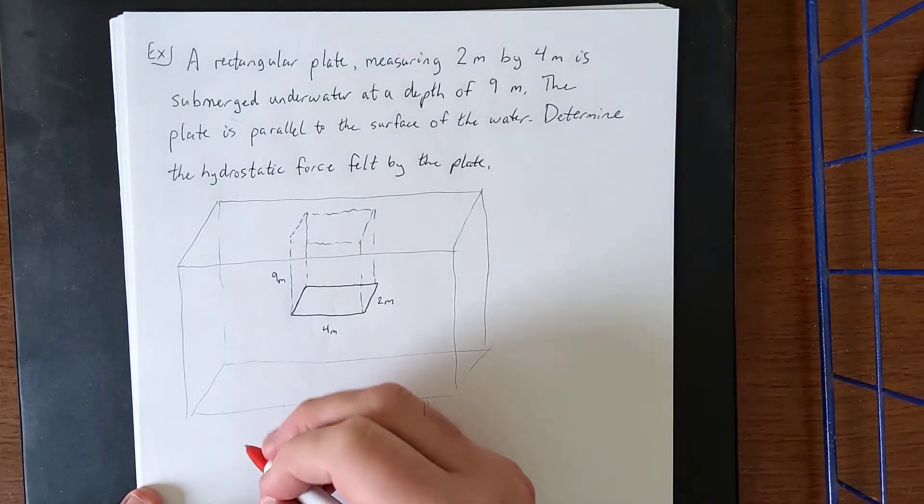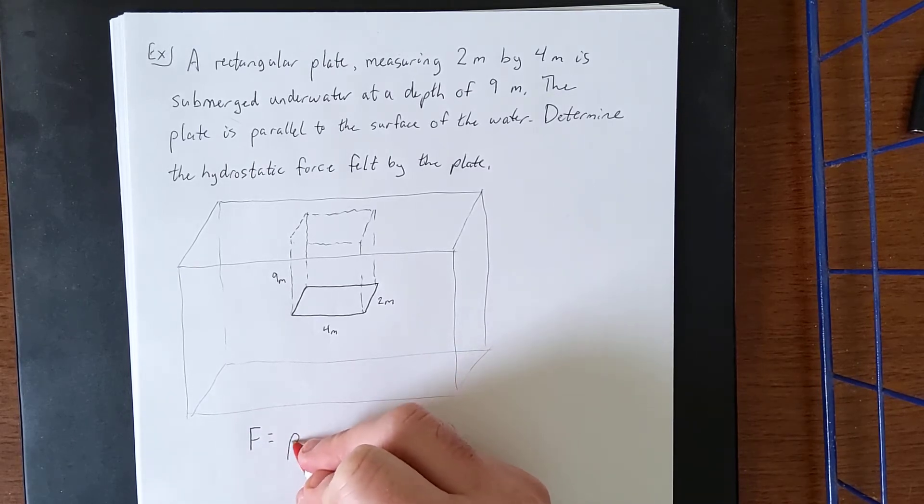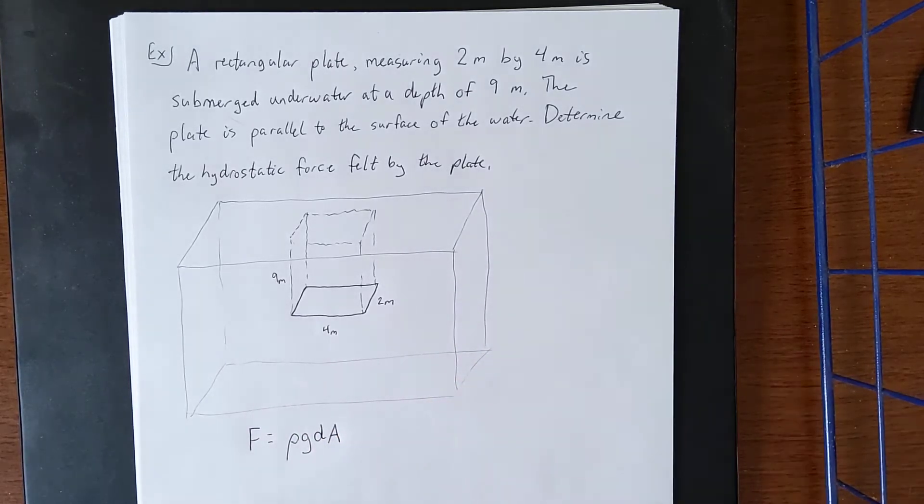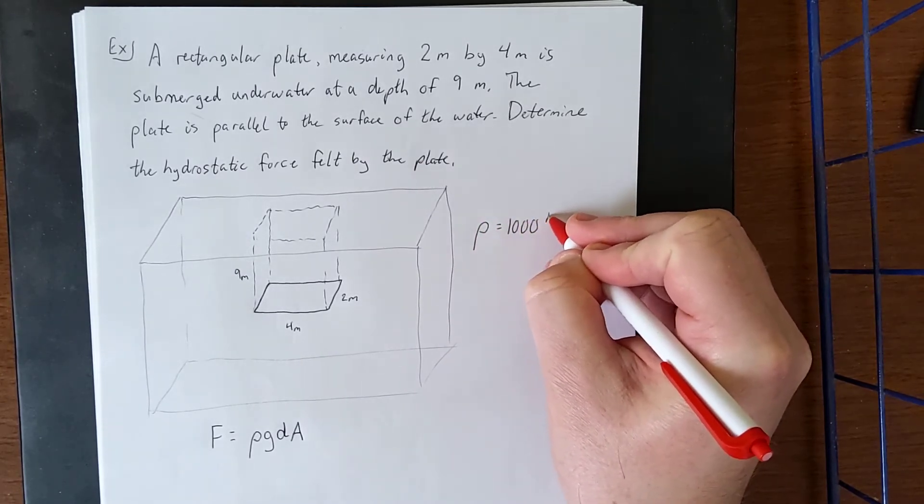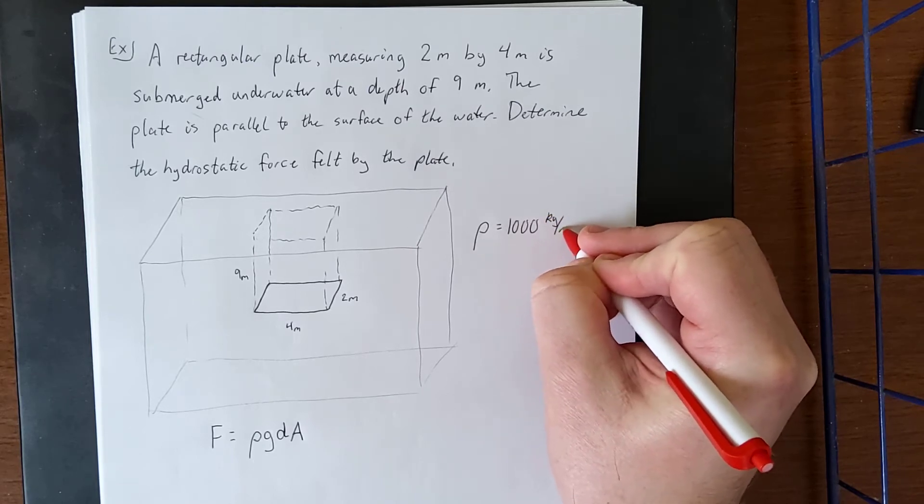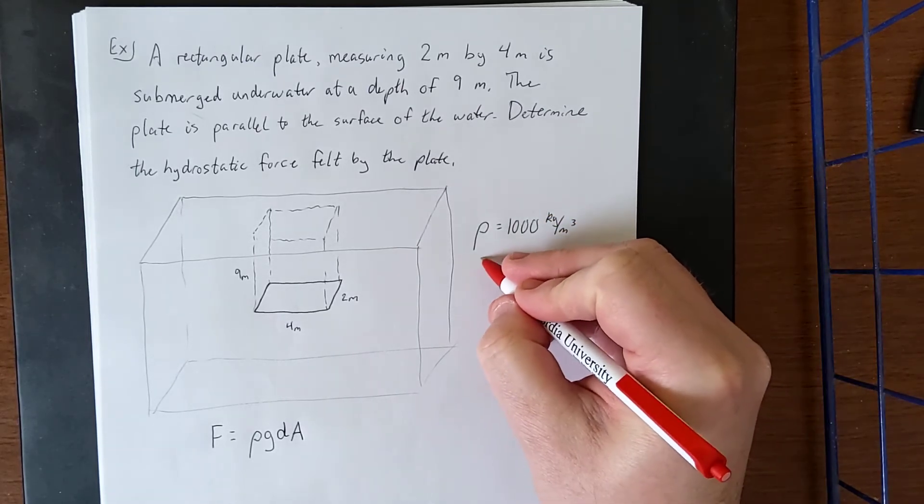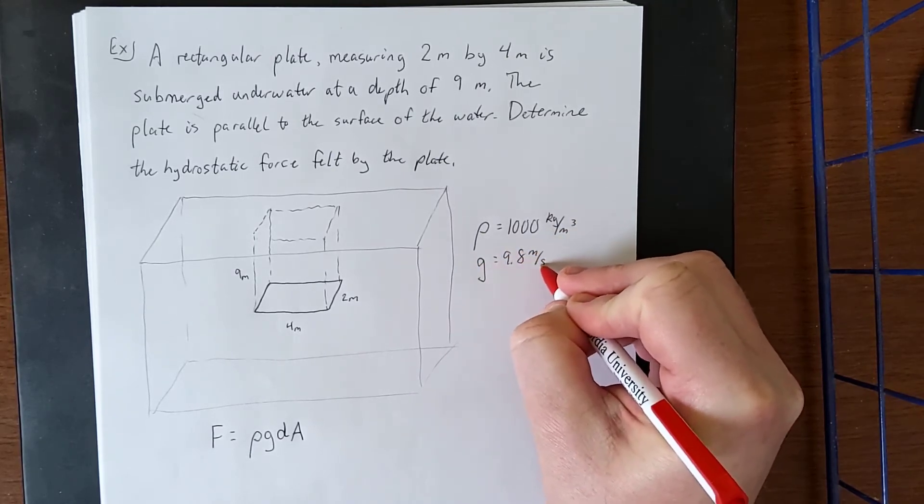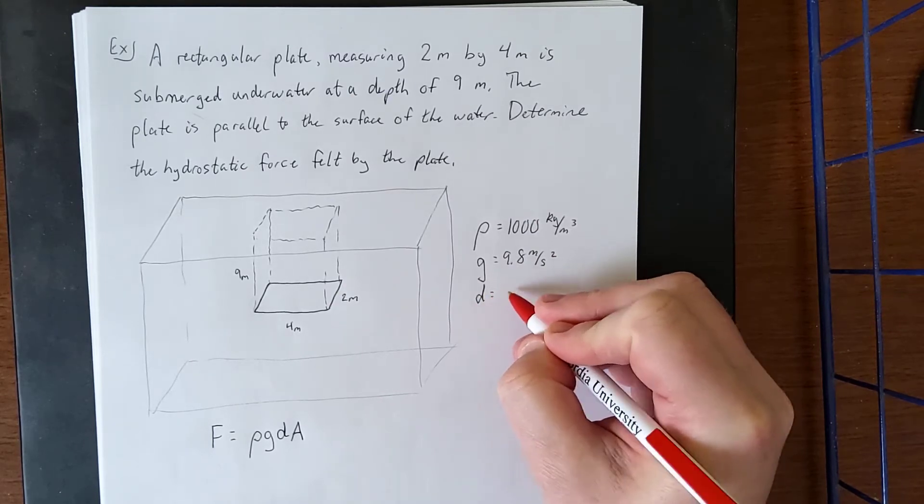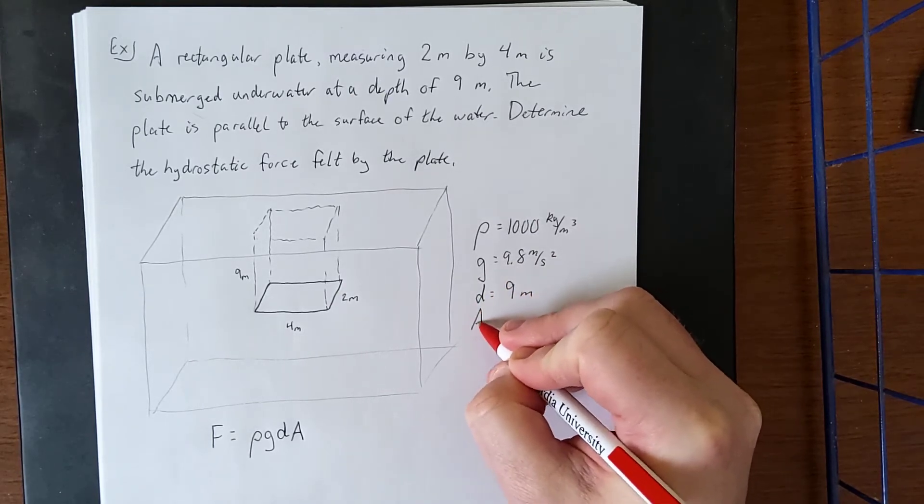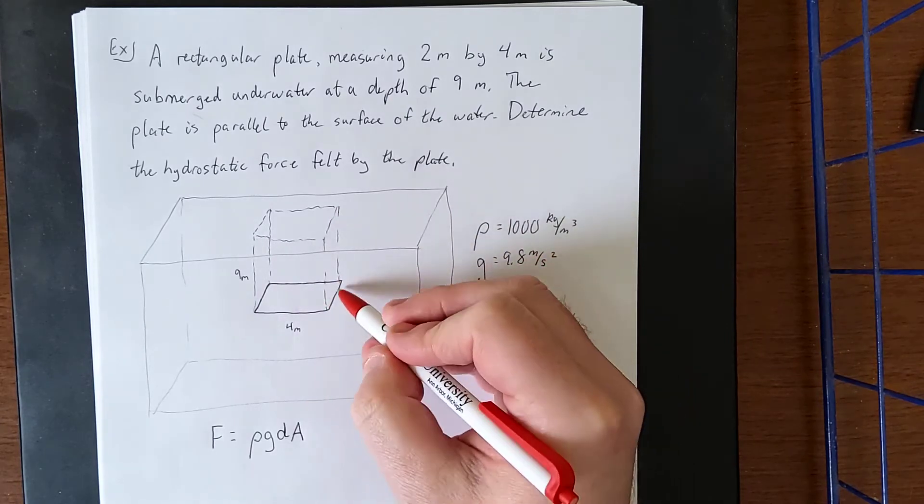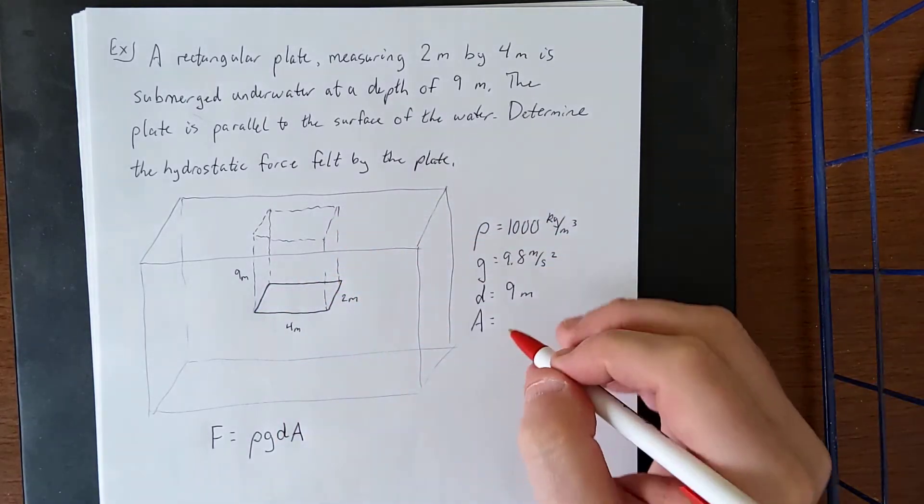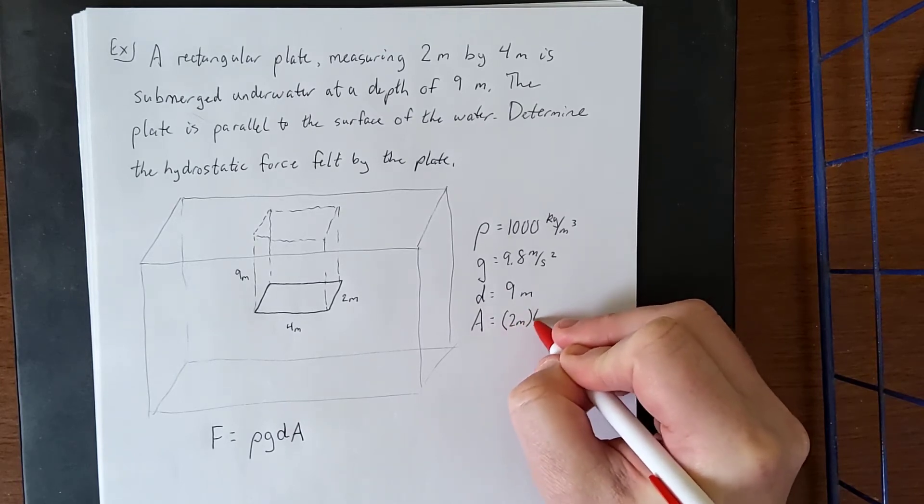Now what I had mentioned in the previous video is that the force felt by this is going to be ρgdA. What I'd like to do is identify what each of these variables are. ρ is a constant, 1000 kilograms per cubic meter. Acceleration due to gravity is going to be 9.8 meters per second squared. The depth that we have for the plate is going to be a total of 9 meters. And the cross-sectional area in this case is going to be a nice consistent rectangle all the way down, same as the shape of the rectangular plate, so that's going to be 2 meters times 4 meters.